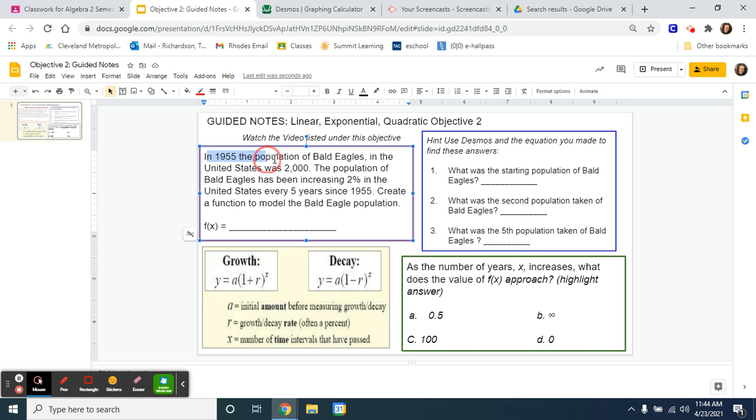It says in 1955, the population of bald eagles in the United States was 2,000. The population of bald eagles has been increasing 2% in the United States every five years since 1955.